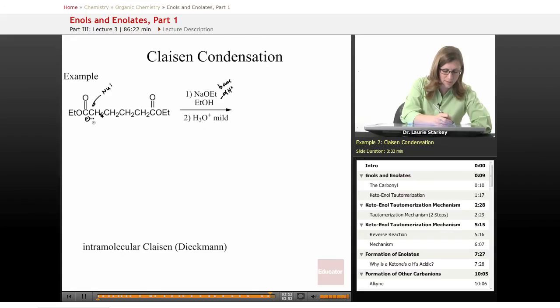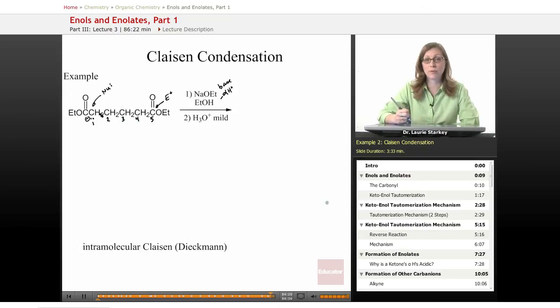If this is our first carbon, this is one, two, three, four, five atoms away from a carbonyl, which is electrophilic. So would forming a five-membered ring be a favorable ring to form? Absolutely. Five and six-membered rings are the ones that we're always going to be looking for.